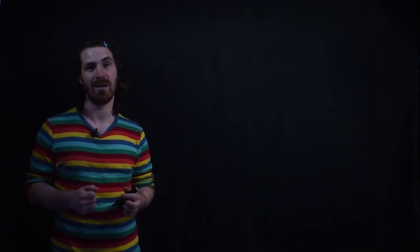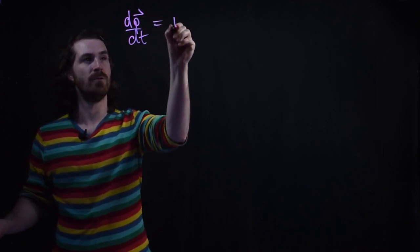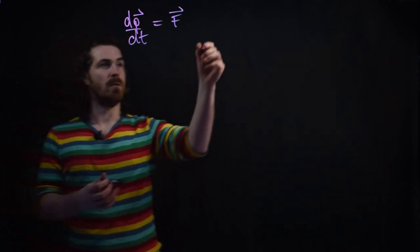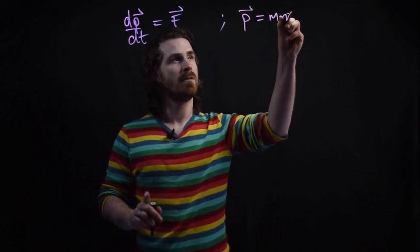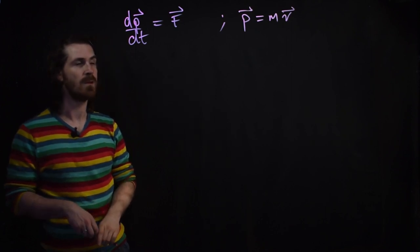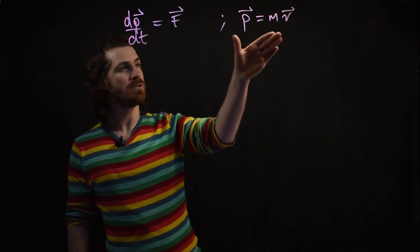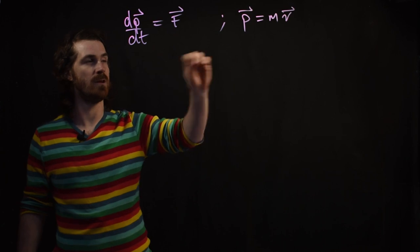We want to hang on to the ideas of Newtonian mechanics. Newton's laws told us that the rate of change of momentum, dp by dt, was equal to the force acting on a particle. And momentum p is equal to the mass of a body times its velocity. This tells us that a bus is more difficult to stop than a bumblebee traveling at the same velocity.